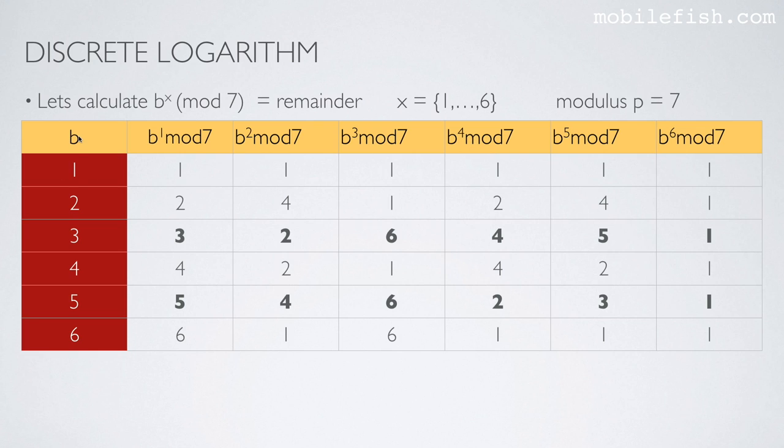If you take the base value of 1, these are the remainders. As you can see, these are not distinct, they are all 1. But base value 3 generates distinct values: 1, 2, 3, 4, 5, 6. The same applies to 5: 1, 2, 3, 4, 5, 6. And all the others, 6, 4, 2, and 1, don't generate distinct remainders.